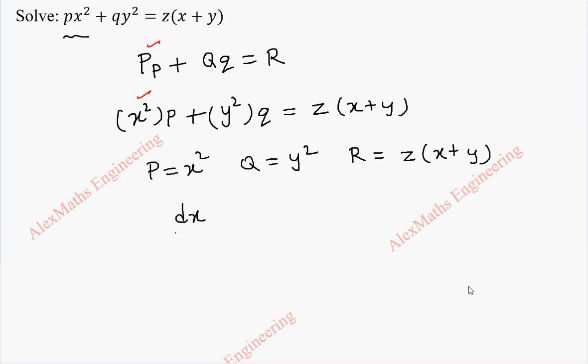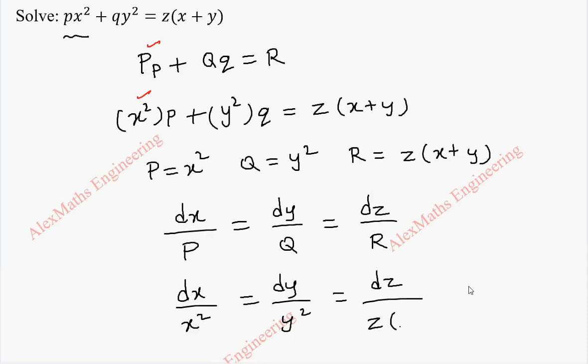To get the solution we have to solve dx by capital P equal to dy by capital Q equal to dz by capital R. Now, this is dx by x square equal to dy by y square and dz by z into x plus y.